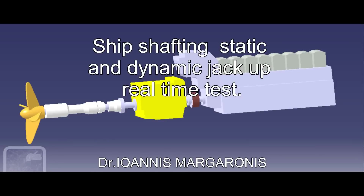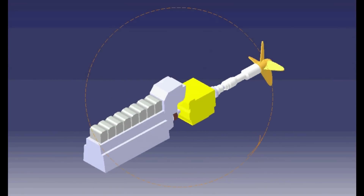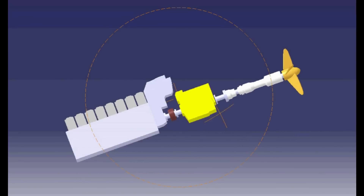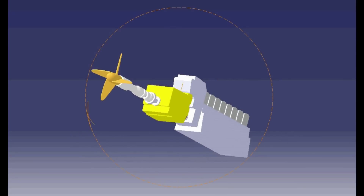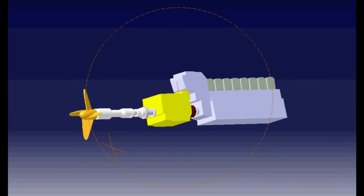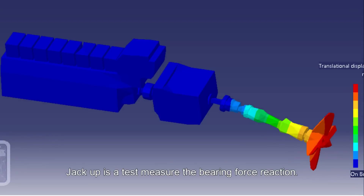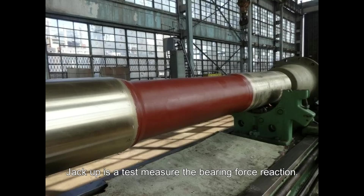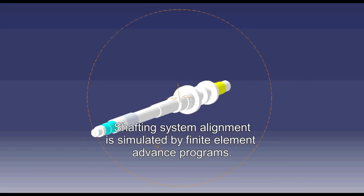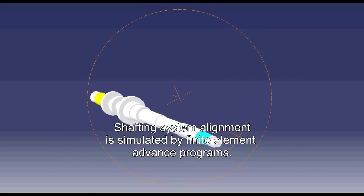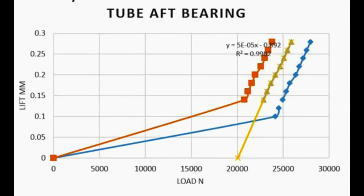Ship shafting static and dynamic jackup real-time test. Jackup is a test to measure the bearing reaction forces, mainly in the vertical direction. Shafting system alignment is simulated by finite element advanced programs, and the alignment study results are checked by jackup test of bearings.